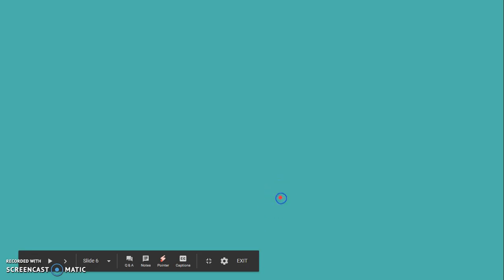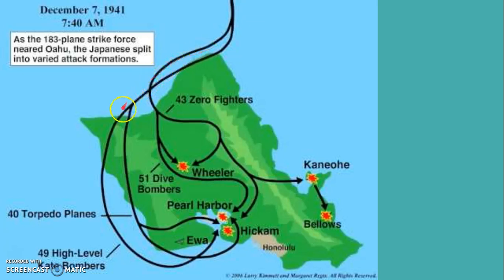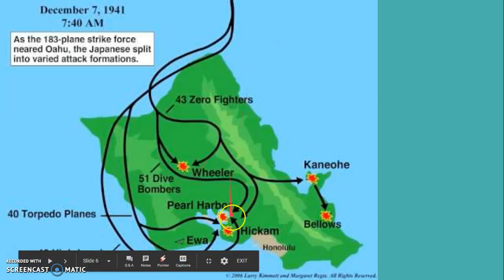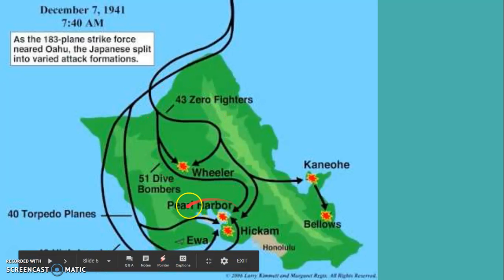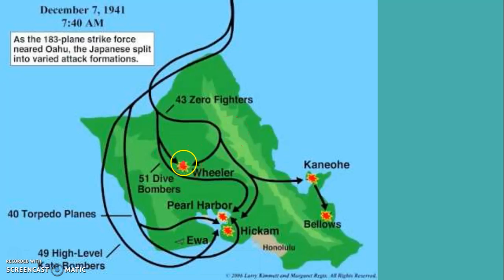Here I'm going to show you the route the Japanese airplanes took. They came in from the back of the island. Looking at Pearl Harbor from the front, they came from the back, circled around, split into two and then three groups, coming in from the left, front, and right, with others coming in from behind. They were attacking from all sides. Since they came from the back, everyone on Pearl Harbor didn't see them coming. They also attacked other smaller military areas nearby.